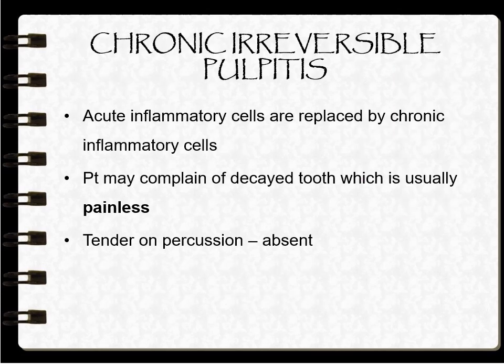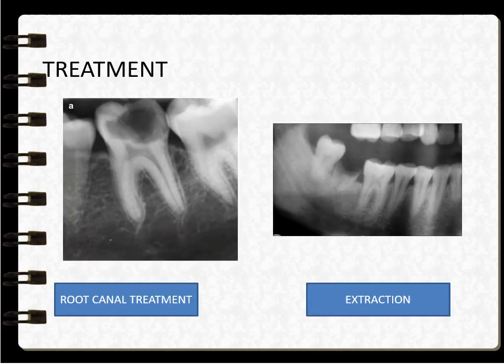In chronic irreversible pulpitis, acute inflammatory cells are replaced by chronic inflammatory cells. The patient may complain of decayed teeth, which is usually painless, and tender on percussion is absent. Teeth that can be saved are treated by root canal treatment, and those that are grossly decayed and cannot be saved are treated by extraction.